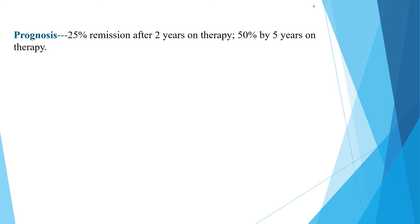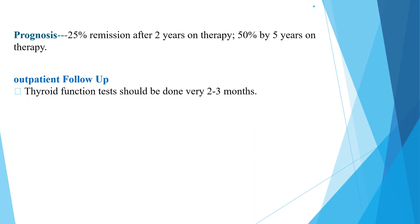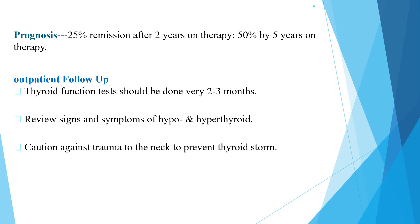The prognosis of Graves disease shows 25 percent remission after two years on therapy and 50 percent by five years. Outpatient follow-up involves thyroid function tests every two to three months and review of signs and symptoms of both hypo- and hyperthyroidism. Patients should be counseled to avoid neck trauma to prevent thyroid storm.